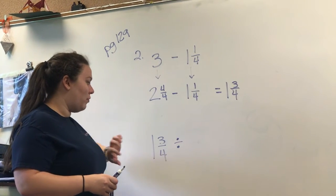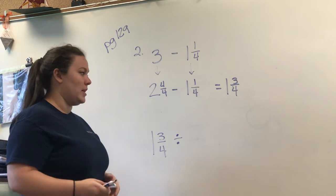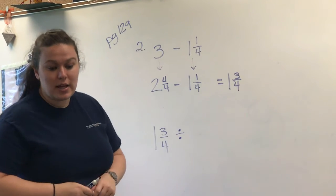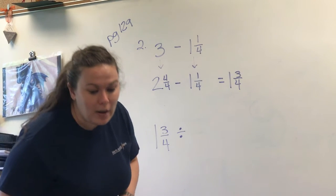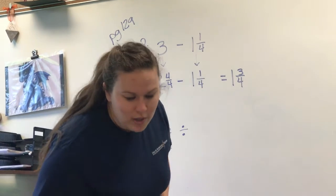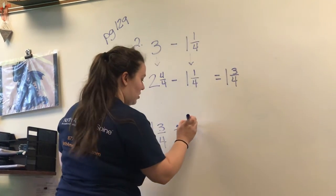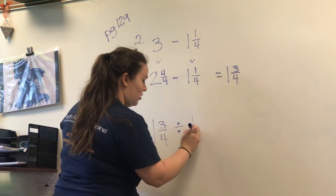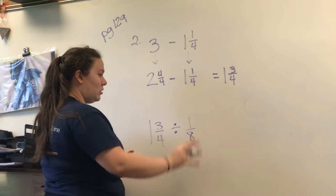So one and three-fourths is the only ribbon that she can use. And then it said that she wants to break that up into one-eighth pieces. Okay. We know how to do this.